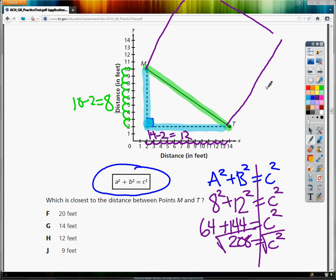So when I type in 208 and I take that square root, the answer that I get for C is 14.4. I'm going to round it to the tenths place here. So the correct answer for this question, number eight, is G.